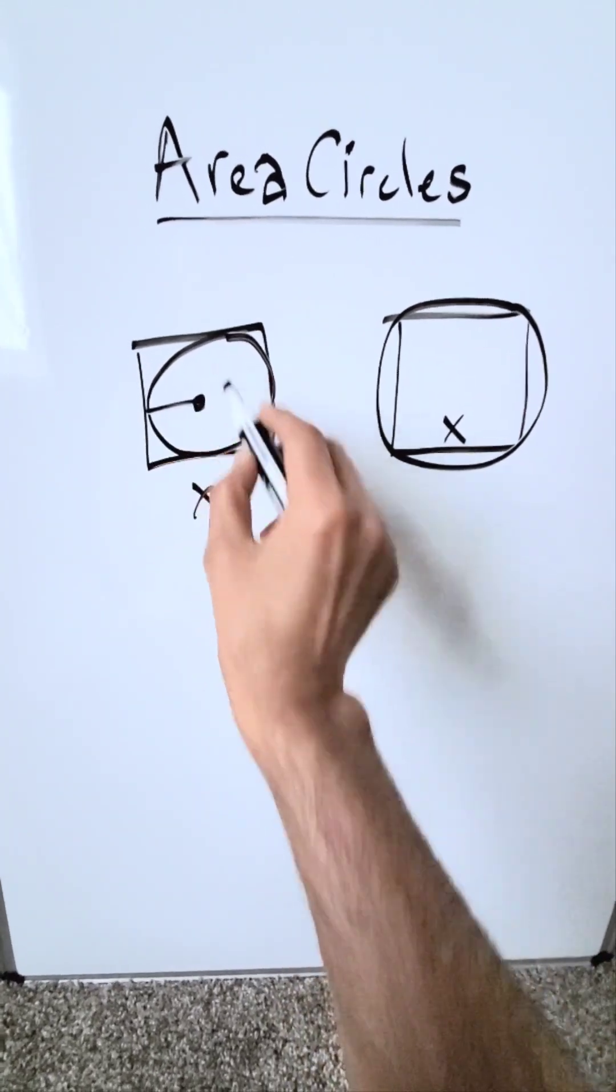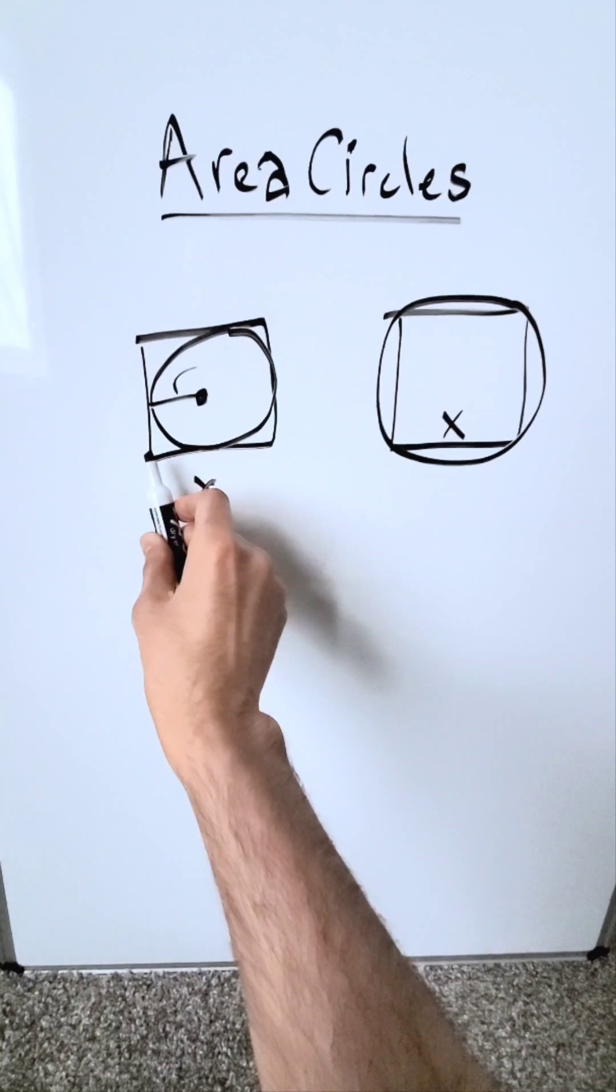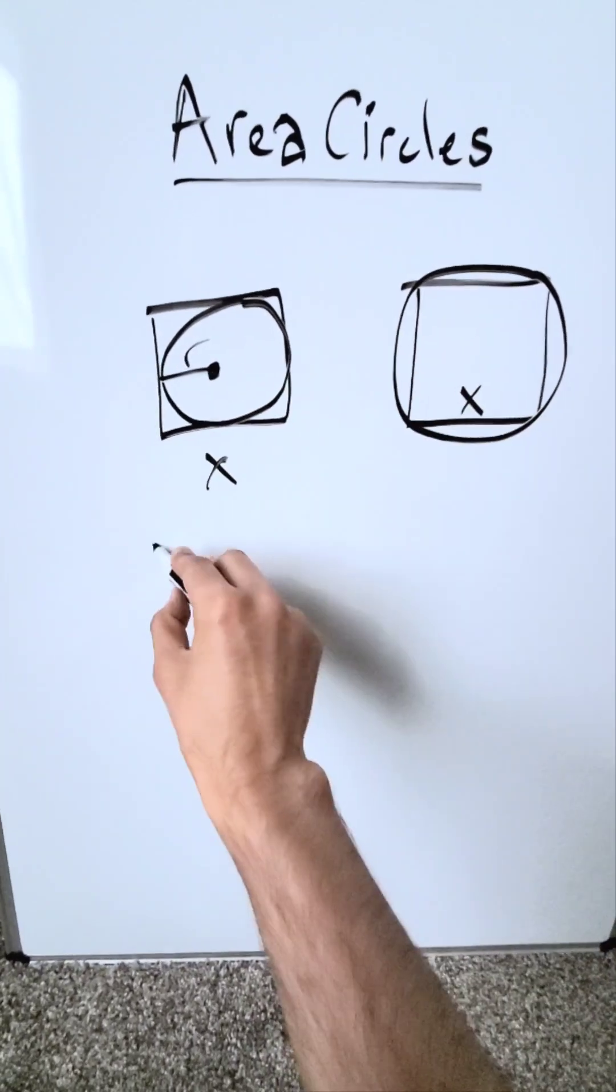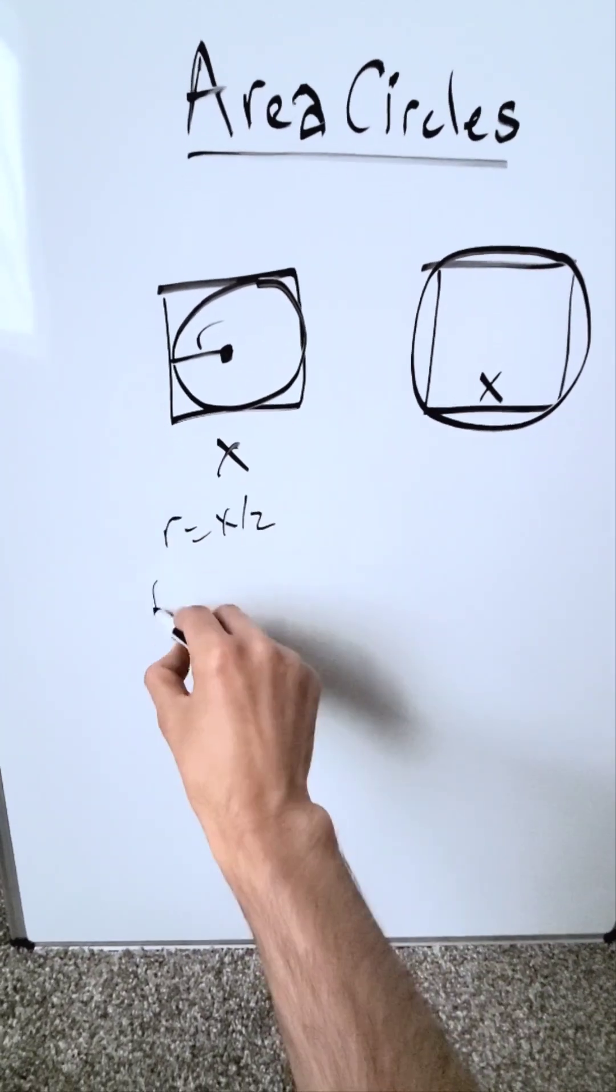For this circle, I have a radius, and it looks like this. You know the radius is half the side dimension of the square. Here, your radius is x over 2.